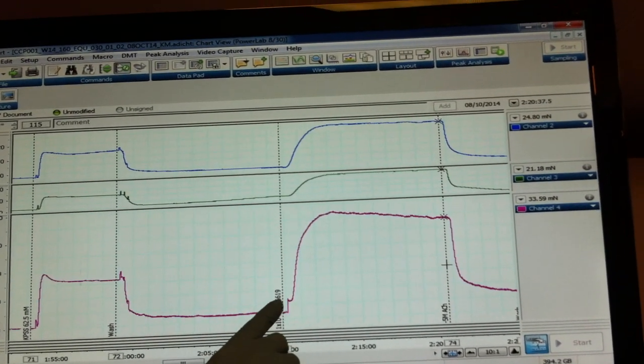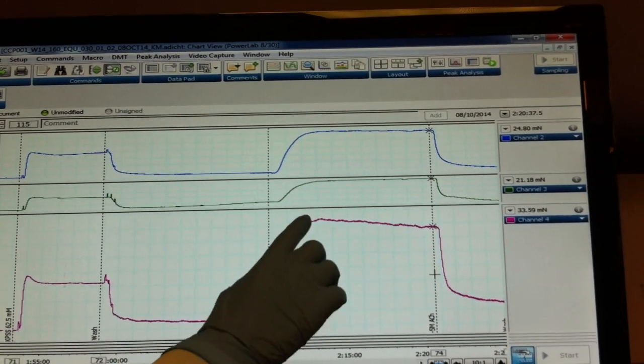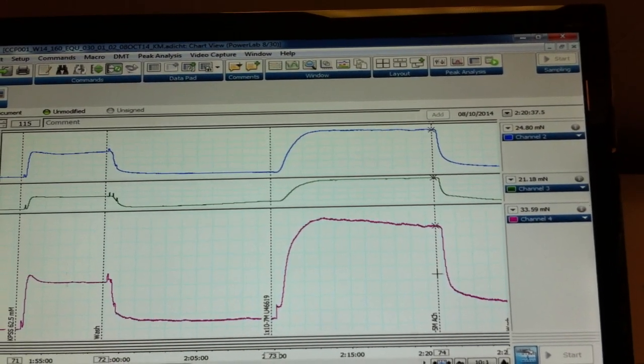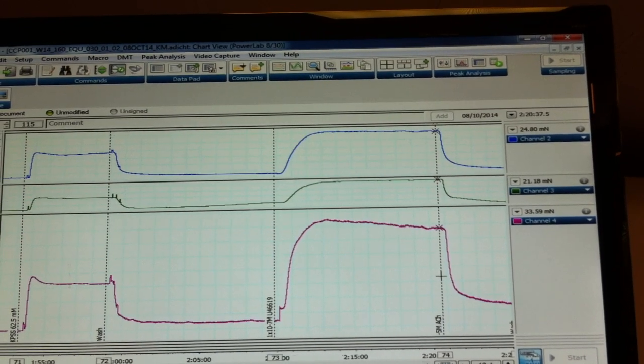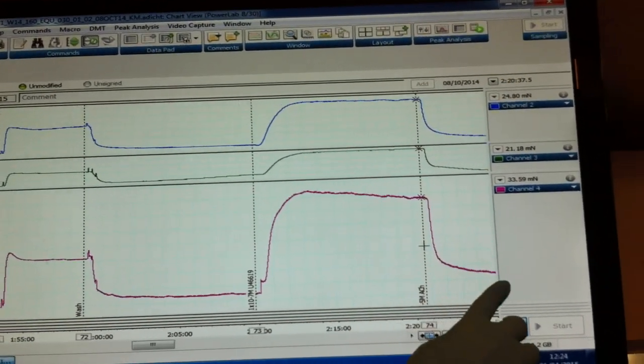Again, once we have a steady baseline response, a contractile mediator is added to cause constriction, demonstrated here. And then endothelial dependent relaxation is assessed using acetylcholine to cause the relaxation demonstrated here.